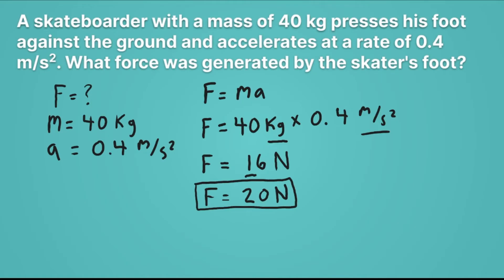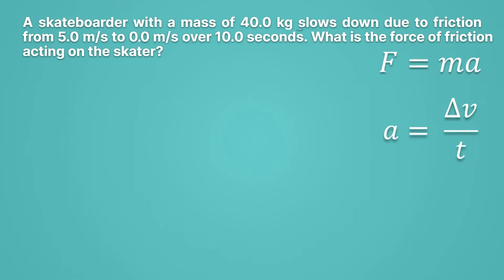Let's do one more problem with this f equals ma equation. This one will be just a little bit more challenging. Here, we're told that a skateboarder with a mass of 40 kilograms slows down due to friction. So on the skateboard, there's this force of friction slowing it down. And it slows it down from 5 meters per second to 0 meters per second over a 10-second period. And we want to know, what is the force of friction acting on the skateboarder? Well, that's a lot. And maybe you feel like, I have no idea. That's okay.